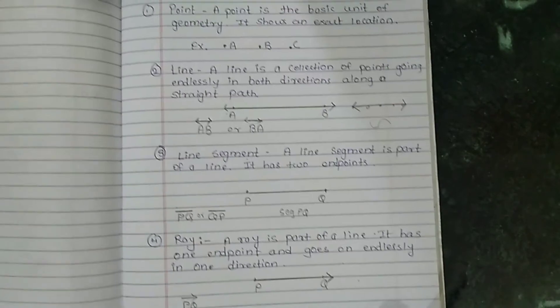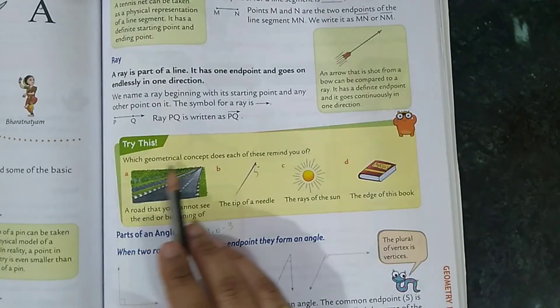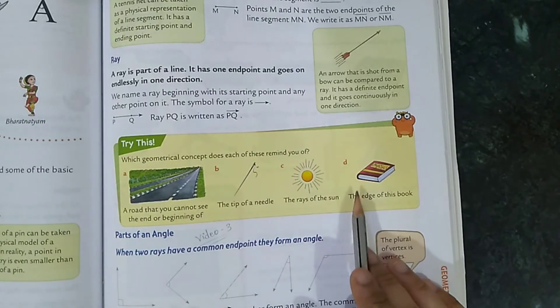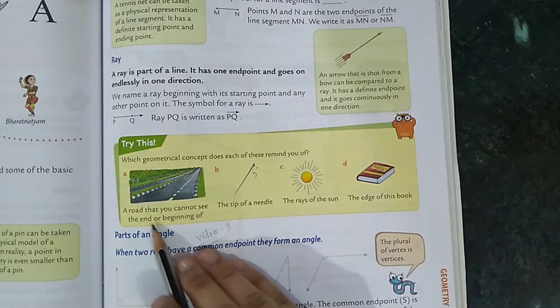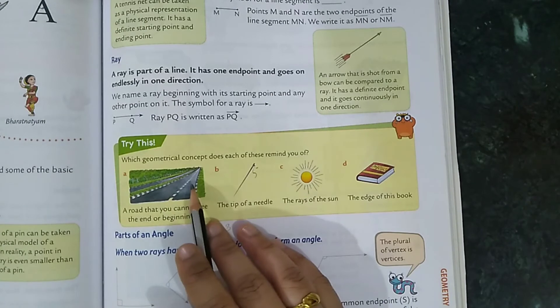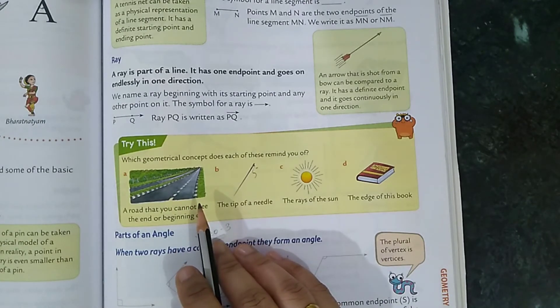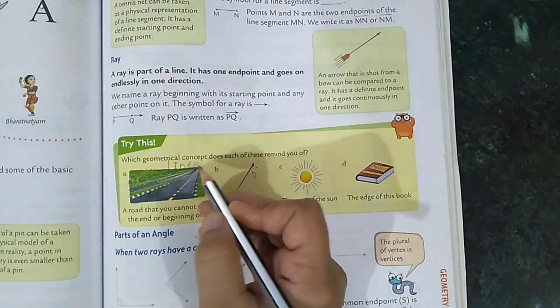Now try this. Which geometrical concept does each of these remind you of? A road that you cannot see the end or beginning of. This road, you don't know where it's starting, you don't know where it's ending. So what does this remind you of? It's a line. The tip of a needle. What does the needle tip remind you of? A point.